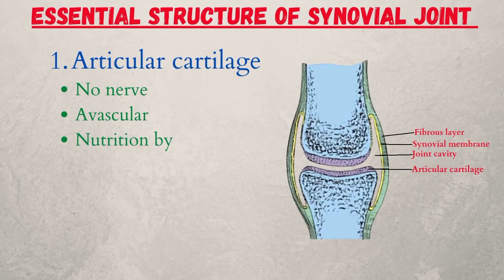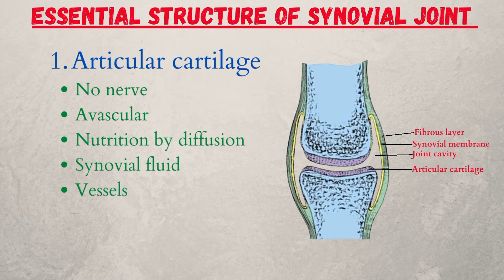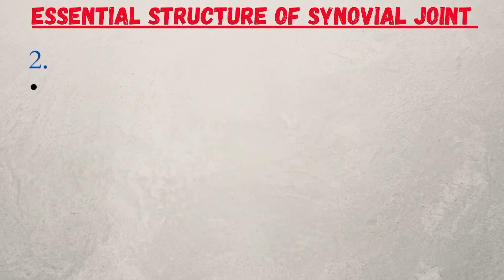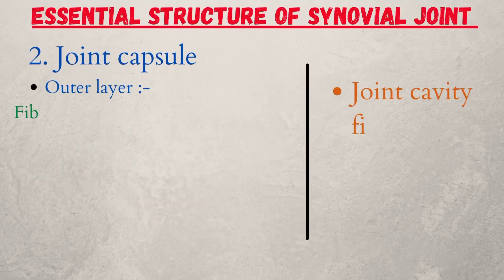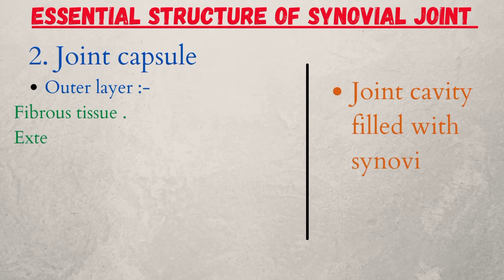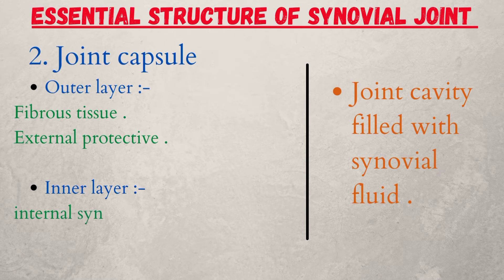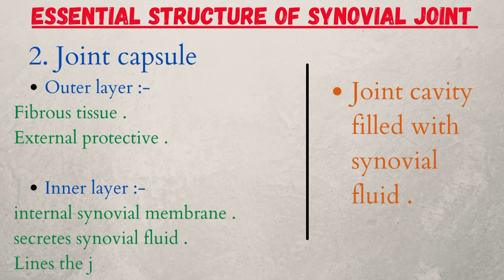Essential structures of the synovial joint: one, articular cartilage — no nerve, avascular, nutrition by diffusion of synovial fluid from vessels. Two, joint capsule — divided into outer and inner layers. The outer layer is fibrous tissue, external and protective. The inner layer is the synovial membrane, which secretes synovial fluid and lines the joint cavity.